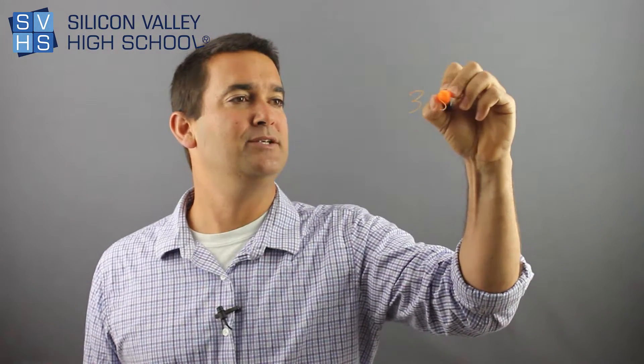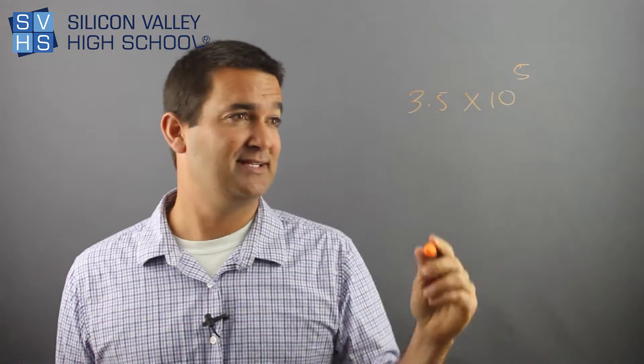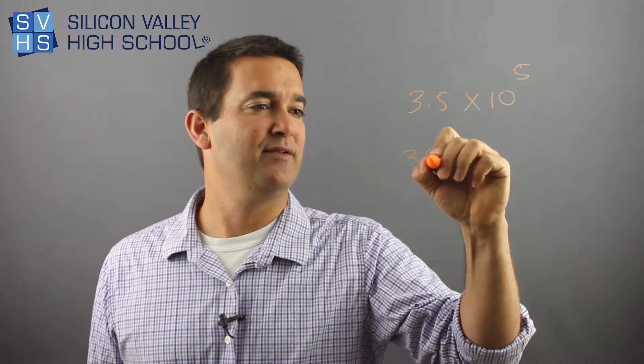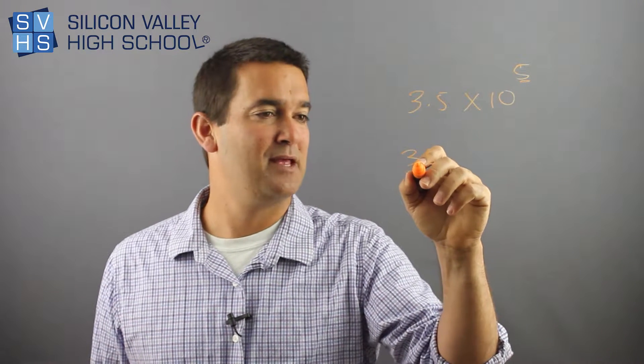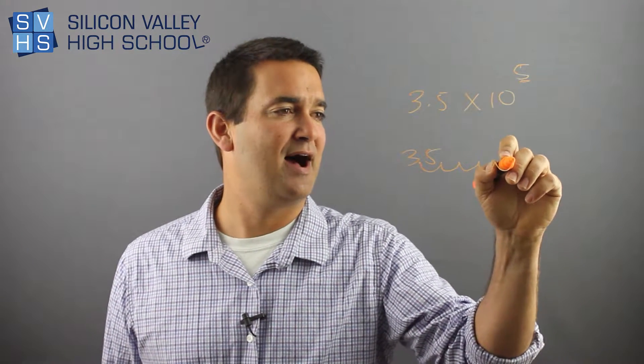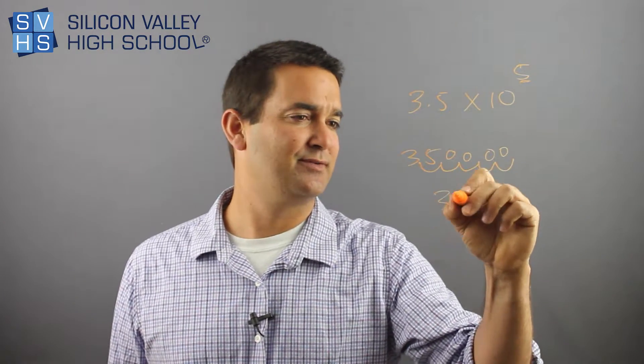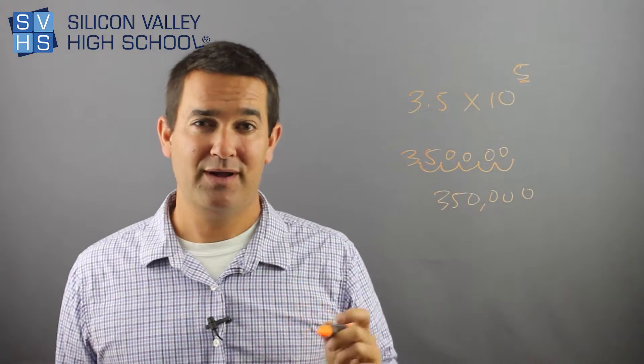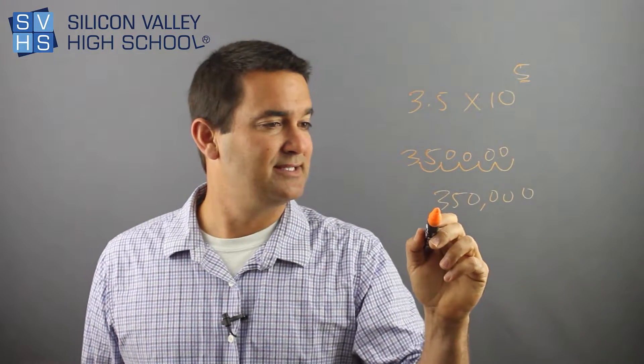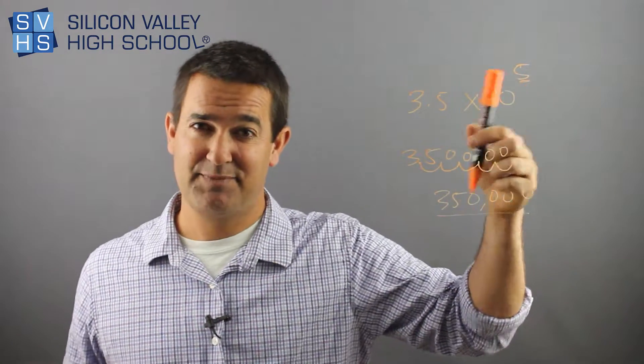So let's say they said convert this into standard notation. It's already in scientific notation. I want it in normal notation. You'd write 3.5, and then you'd move it five places. This tells you how many places to move. 1, 2, 3, 4, 5. And by the way, I kind of didn't explain, so my final answer is 350,000. I didn't explain how I knew to go that way.